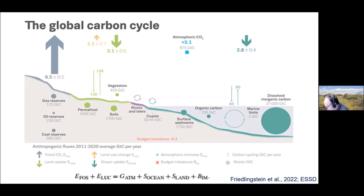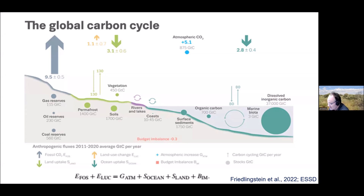Adding a budget imbalance of −0.3 and 0.1 from volcanic eruptions, we have about 11 billion tons — 11 gigatons — of carbon emitted every year. The uptake is 3.1 billion tons into vegetation and biosphere, plus 2.8 into the oceans, totaling 5.9 gigatons absorbed.